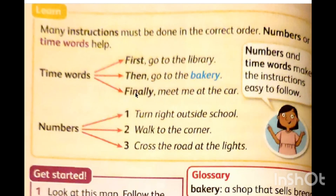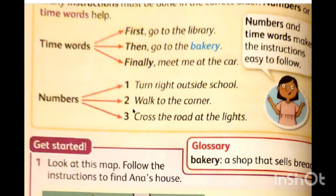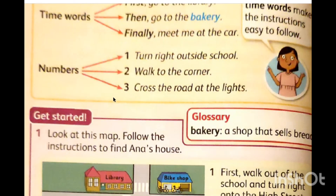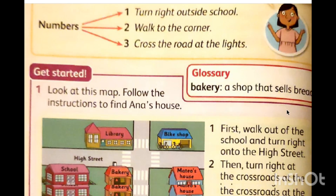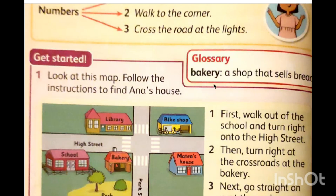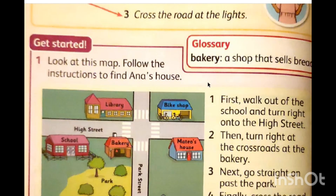For example: number one — turn right outside the school. Number two — walk to the corner. Number three — cross the road at night. What is the meaning of 'bakery'? A bakery is a shop that sells bread. Every day, mummy goes to the bakery to get bread for you to make a sandwich for school.